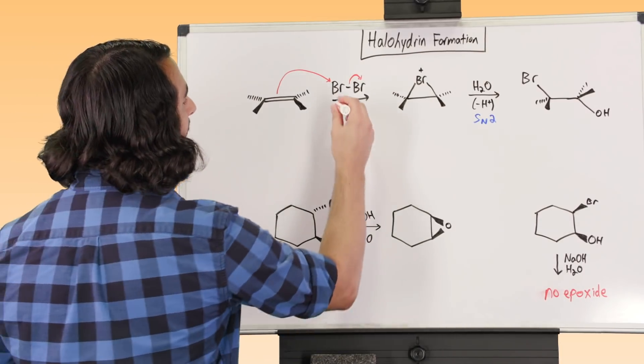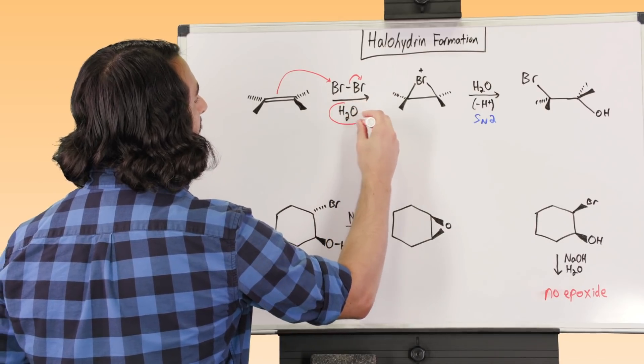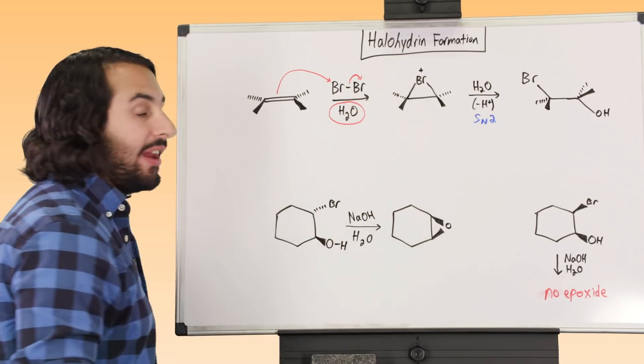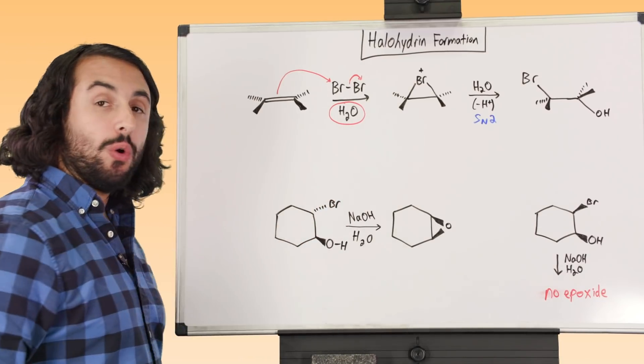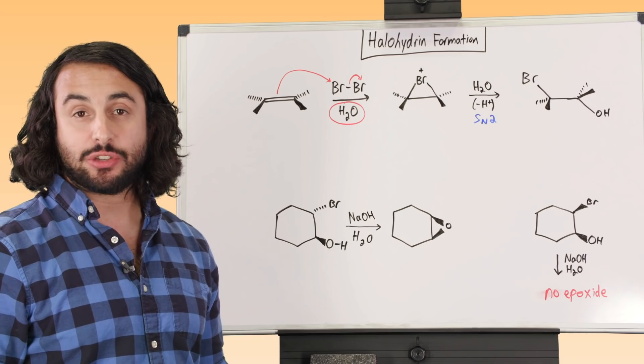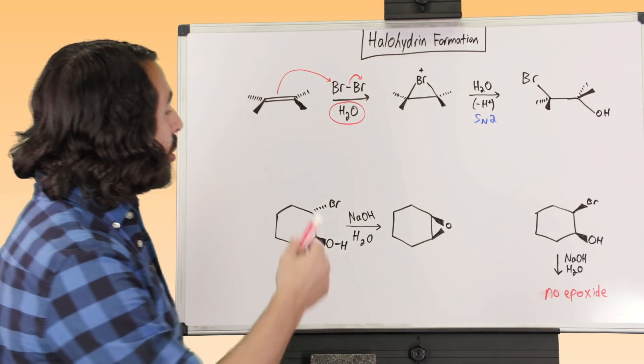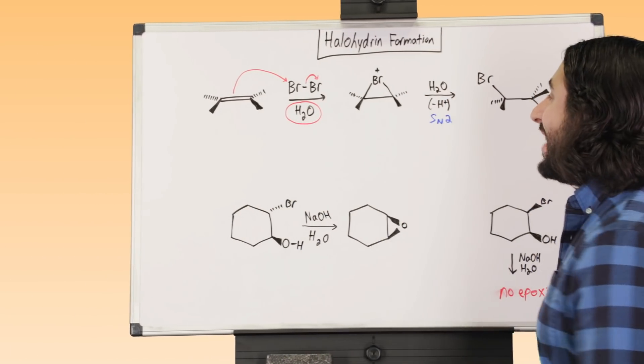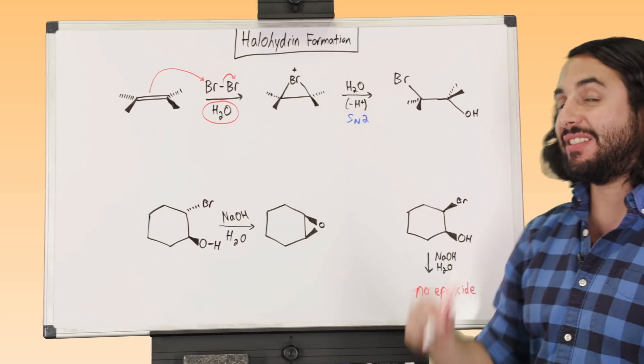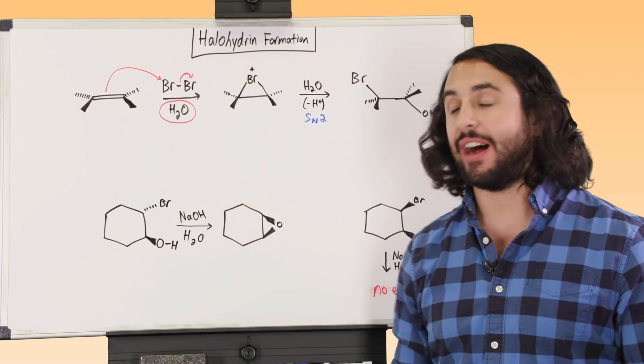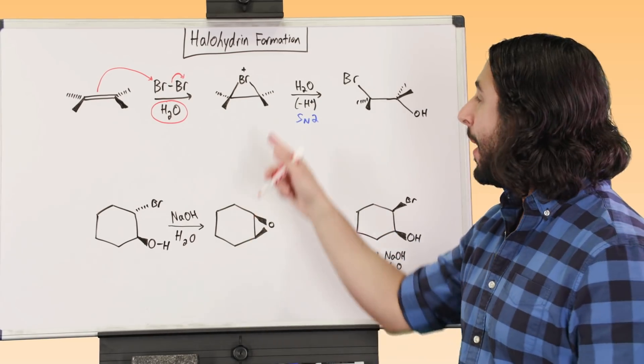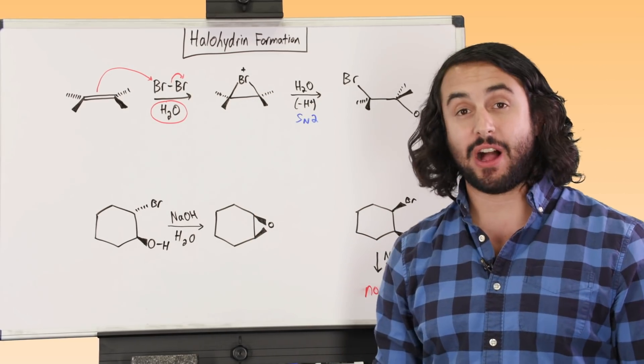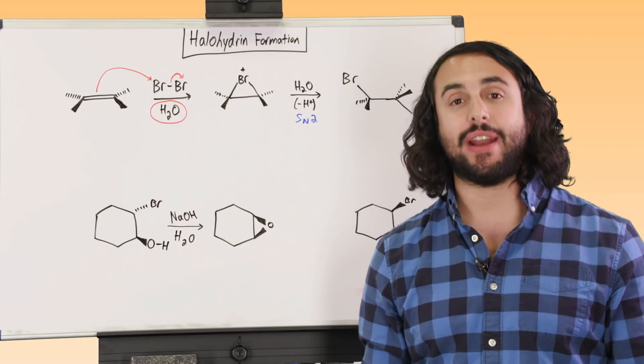Now the key difference here is that we're running this not in aprotic, nonpolar aprotic solution, we're running this in water. So if we're going to run this in water, the second step is actually going to go a little bit of a different way. So we know that when we do dihalogenation, what was going to happen next is that the bromide ion that we generated right here was going to go ahead and do SN2, pop open the bromonium ion, and we were going to get our dihalogenated product.